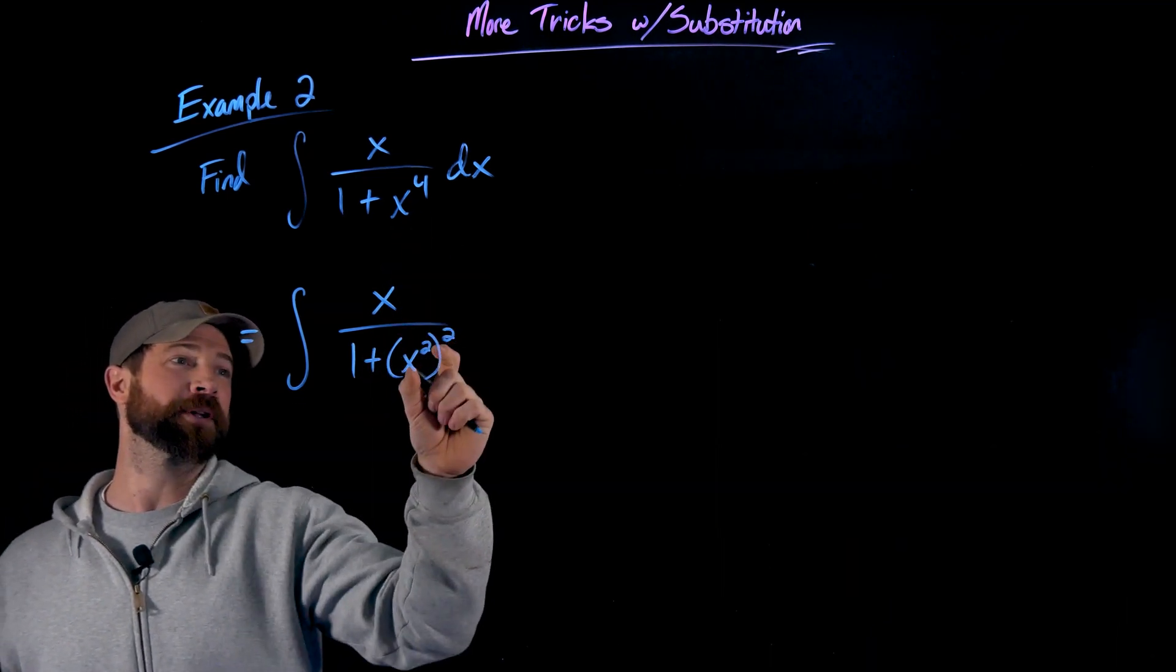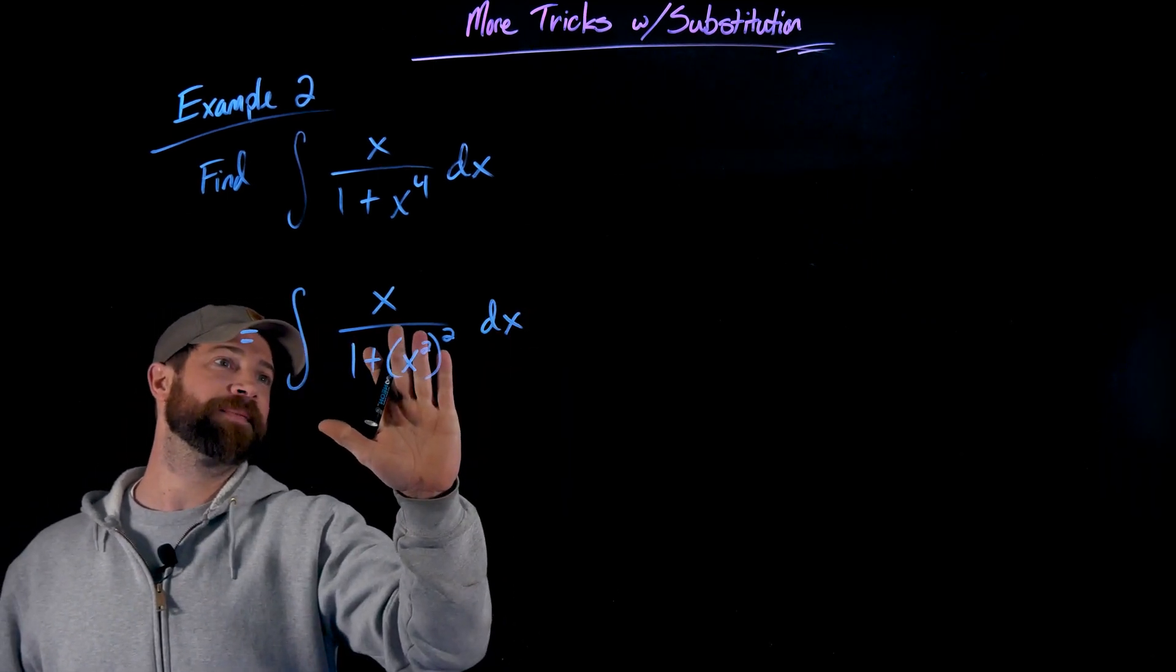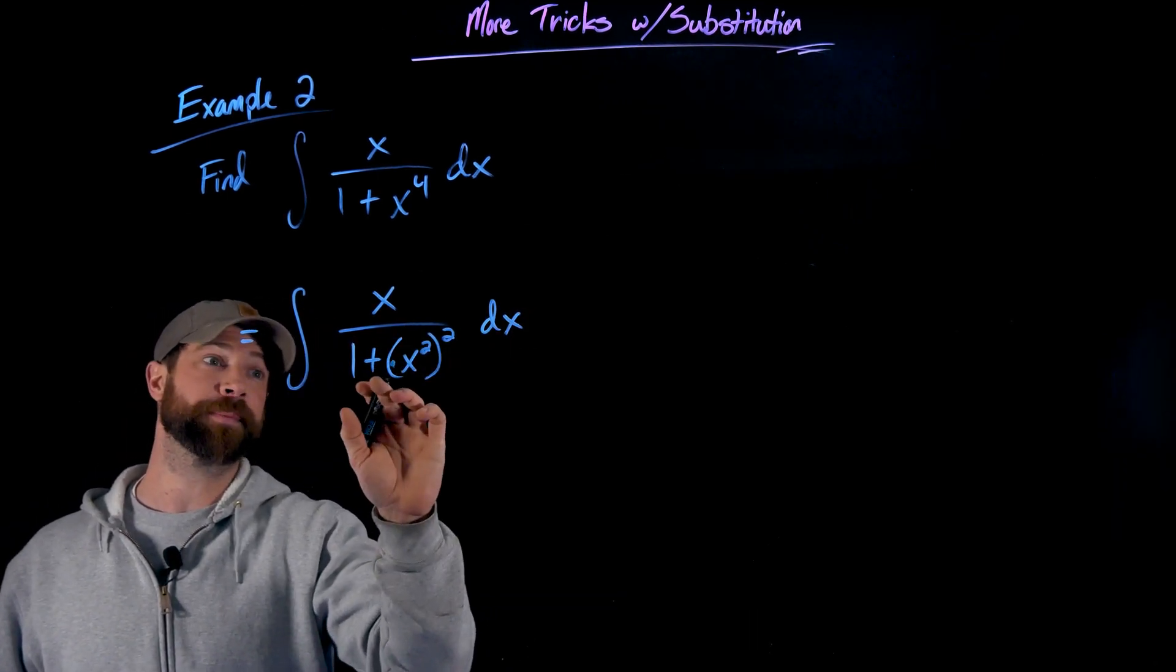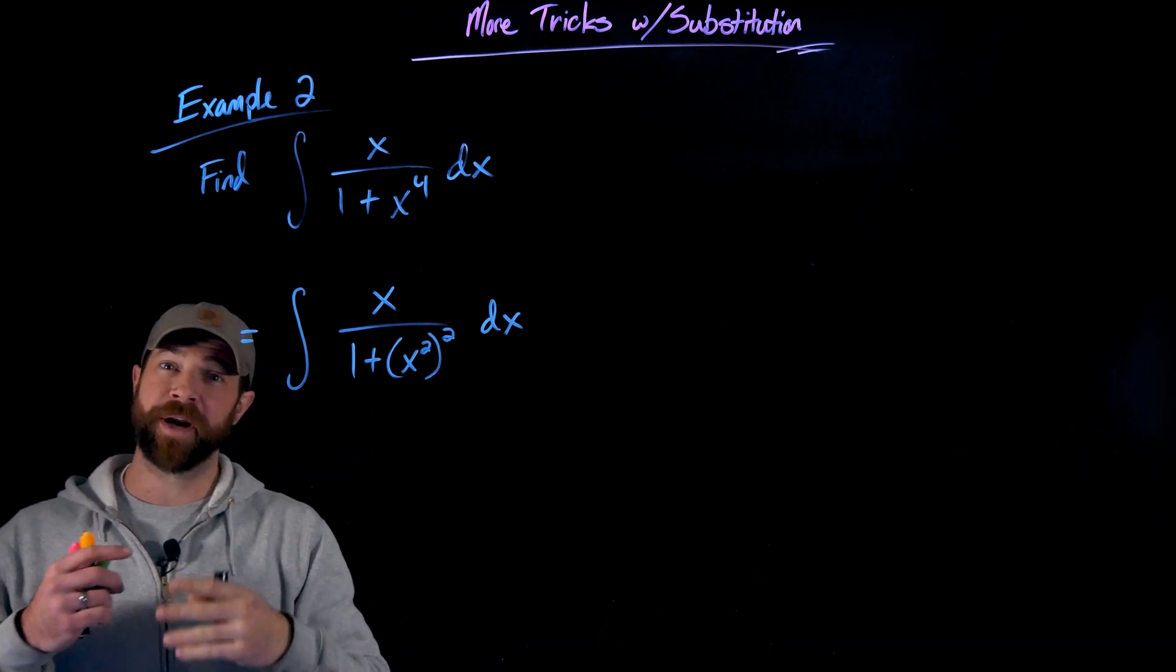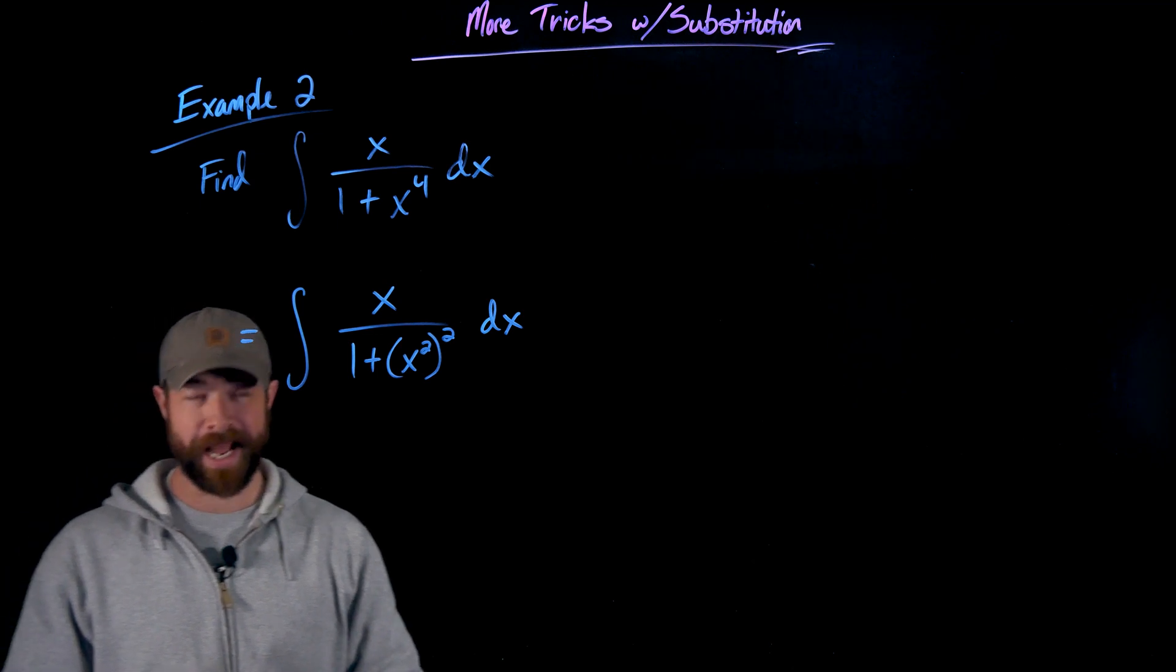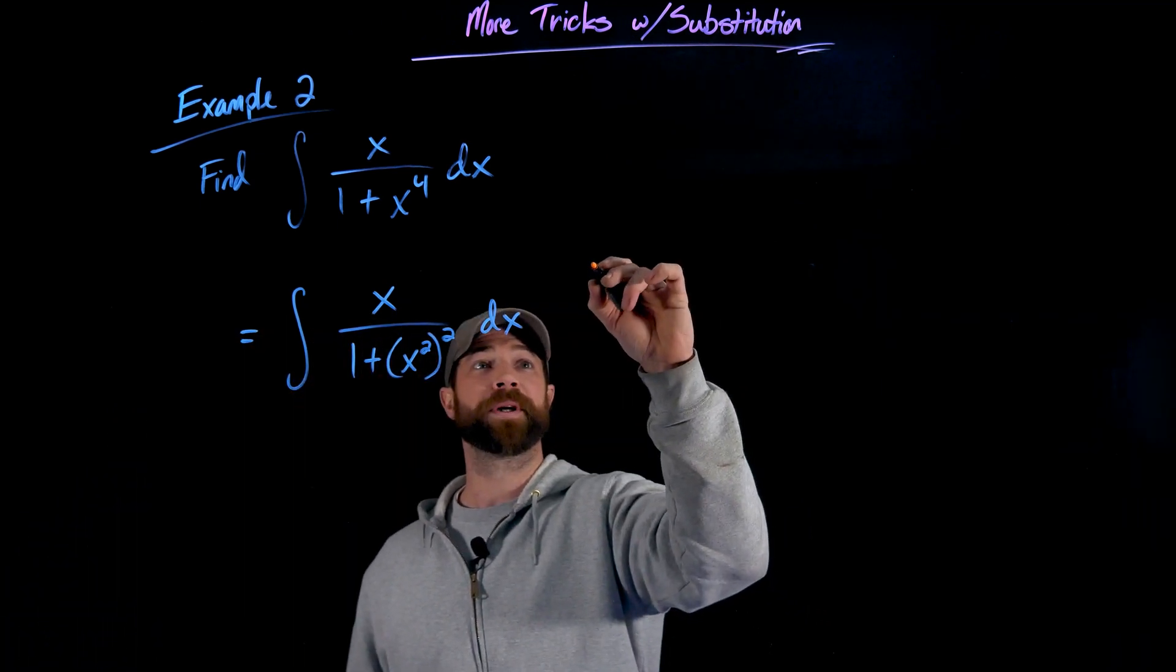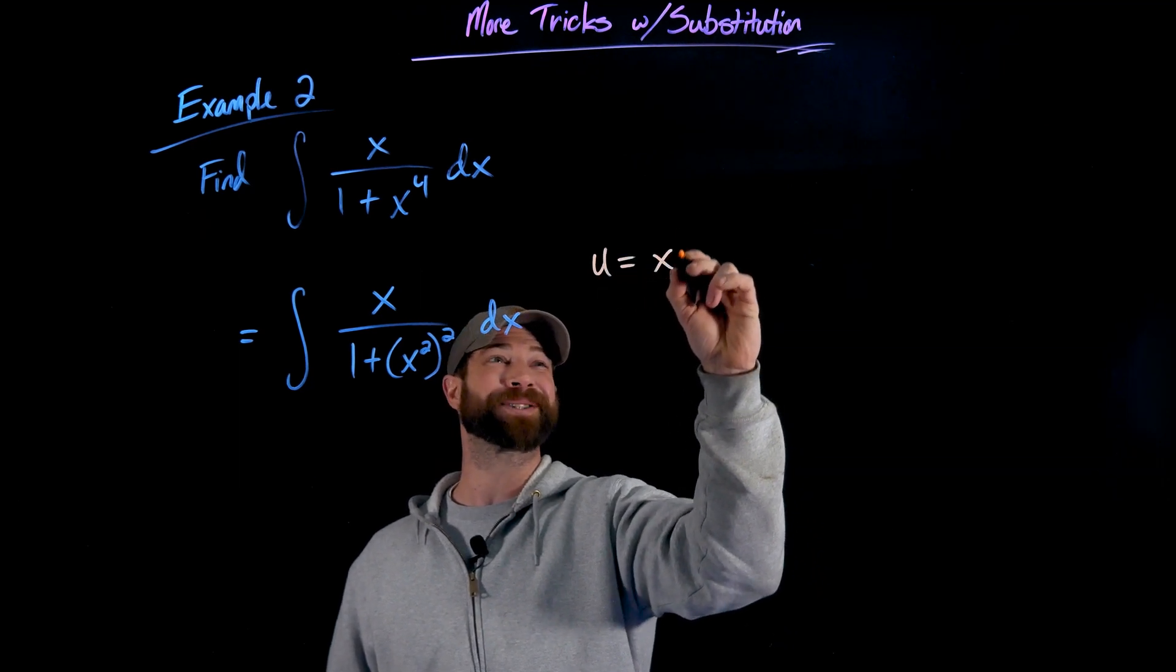So I'm thinking about x to the 4th as x² squared. And the nature of this is that if I have a variable like u squared, 1 plus u², that looks very similar to that tangent inverse derivative. And that's exactly what's going to happen right here. So what I'm going to do now with that little switch in my head, I'm going to let u equal x².